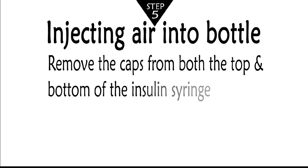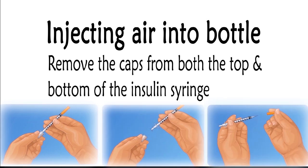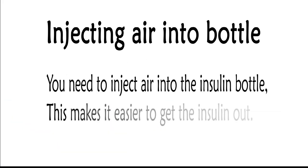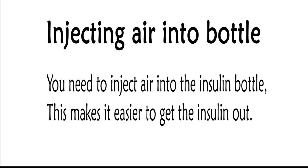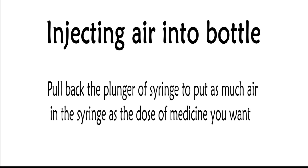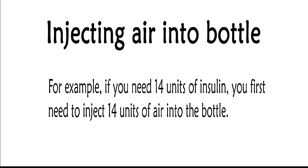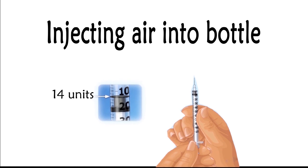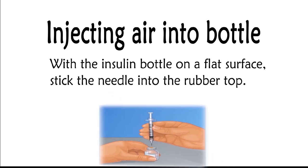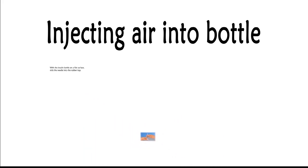For injecting air into the bottle, first remove caps from both the top and bottom of the insulin syringe, being careful not to touch the needle to keep it sterile. Then you need to inject air into the insulin bottle — this makes it easier to get the insulin out. Pull back the plunger of the syringe to put as much air in the syringe as the dose of medicine you want. For example, if you need 14 units of insulin, you first need to inject 14 units of air into the bottle. Pull back the plunger until the bottom lines up with the 14-unit mark. With the insulin bottle on a flat surface, stick the syringe needle into the bottle's rubber top, then push the air into the bottle.